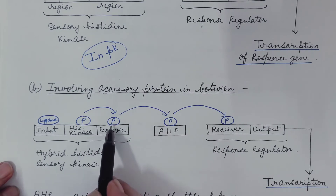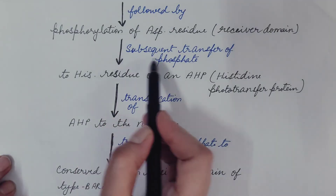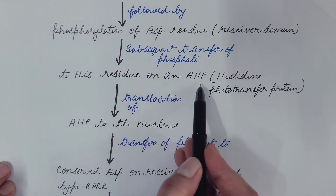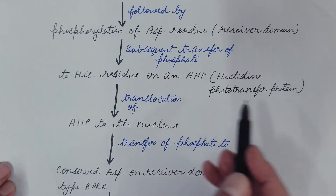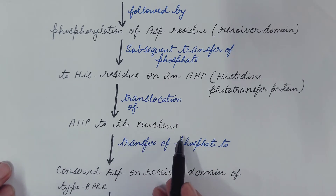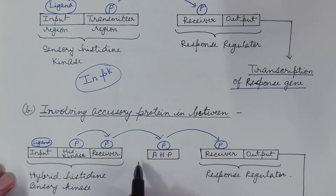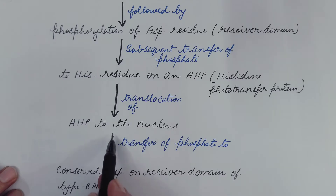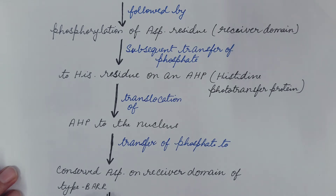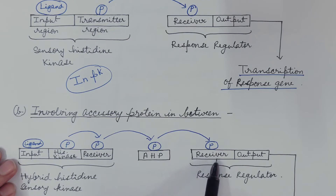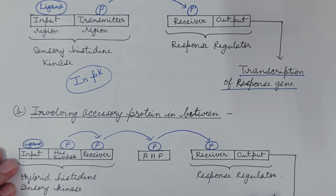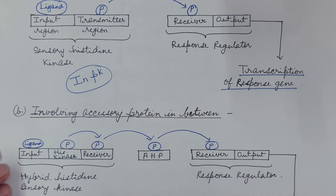This is followed by phosphorylation of the aspartate residue present in the receiver domain. The aspartate residue in the receiver domain is phosphorylated, and subsequent transfer of the phosphate group to a histidine residue on an AHP — histidine phosphotransfer protein — takes place. This is followed by translocation of AHP to the nucleus. The phosphorylated AHP, present in the cytoplasm, is translocated to the nucleus, where the phosphate group is transferred to the conserved aspartate residue present on the receiver domain of Type B ARR, leading to activation of Type B ARR.